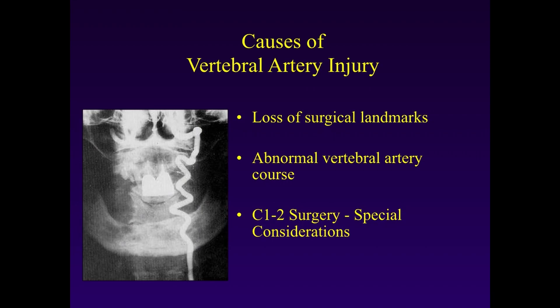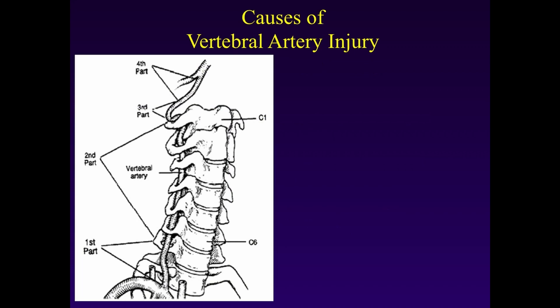There are several causes of vertebral artery injury: loss of surgical landmarks, an abnormal course of the vertebral artery, and at C1 and C2 you must consider the anatomy of the vertebral artery prior to placing fixation so as not to cause injury. The most common location for vertebral artery injury is in the V3 segment during transarticular screw fixation or C1 lateral mass / C2 pedicle screw fixation. The second most common cause, though rare, is during anterior cervical procedures in the V2 segment. Injury in the V1 and V4 segments is very rare.